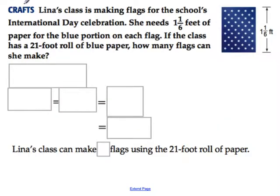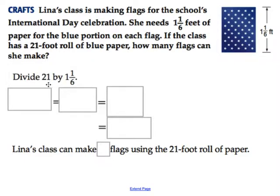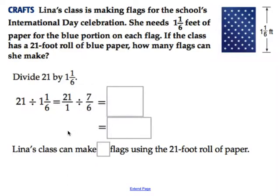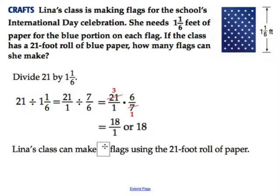Here's a word problem: Lena's class is making flags for the school's International Day celebration. She needs 1 and 1 sixth feet of paper for the blue portion on each flag. If the class has a 21-foot roll of blue paper, how many flags can she make? We take 21 divided by 1 and 1 sixth. Convert to an improper fraction: 7 over 6. Change to multiplication: 21 over 1 times 6 over 7. Reduce: 7 into 7 is 1 and 7 into 21 is 3. Multiply across to get 18 — she can make 18 flags.